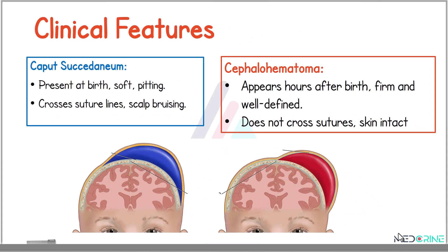Clinically, caput succedaneum occurs at birth. It is soft and has a pitting tendency, it crosses suture lines, and there will be features of scalp bruising. On the other hand, cephalohaematoma occurs hours after birth. It is firm and well defined, does not cross the suture lines, and the skin remains intact.